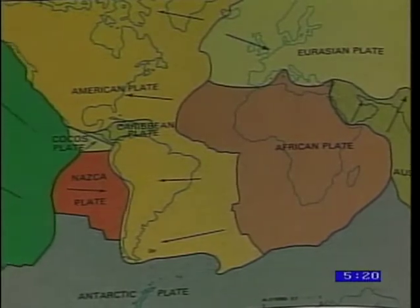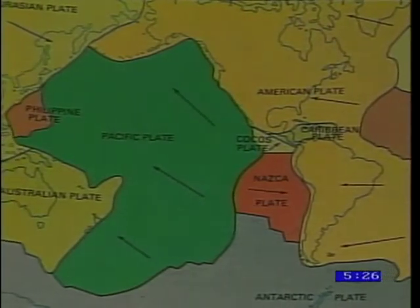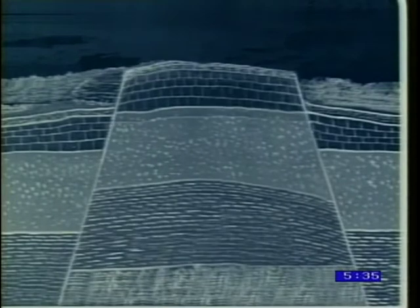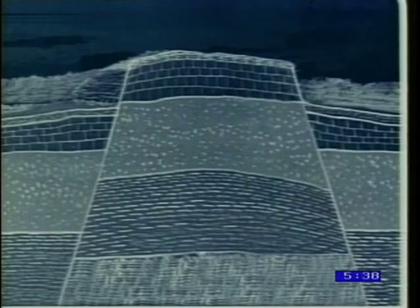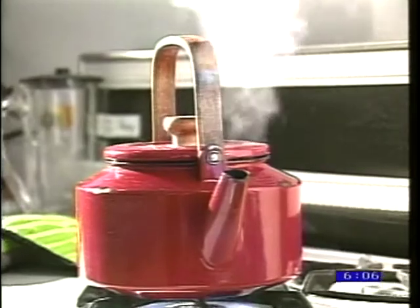This theory basically states that the earth's outer shell is composed of a number of large unanchored slabs of rock, or plates, that are constantly moving over the mantle of the earth. The movement of these plates can cause enormous pressure to build. Earthquakes are the result of nature's efforts to relieve this pressure. Likewise, the theories of plate tectonics can also be applied to another natural phenomenon, volcanoes. In this case, the release of pressure forces molten lava out of the earth's core, much like a boiling teapot spits out steam.